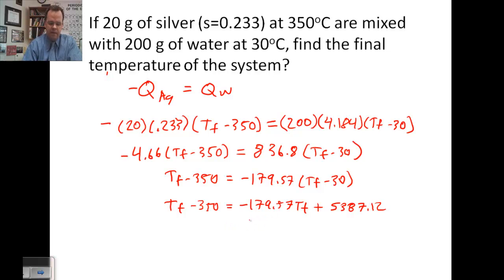Add 179.57 to both sides, T final, so I get 180.57 T final. Add 350 to both sides, and I get 5,737.12, divide by 180.57, and I get a final temperature 31.8 degrees Celsius.